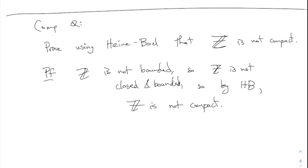This is all I wanted to say about compact sets. Your go-to way of thinking about compact sets should be that they are closed and bounded — that's usually the easier way to think of it. They are also sets for which any open cover has a finite subcover.